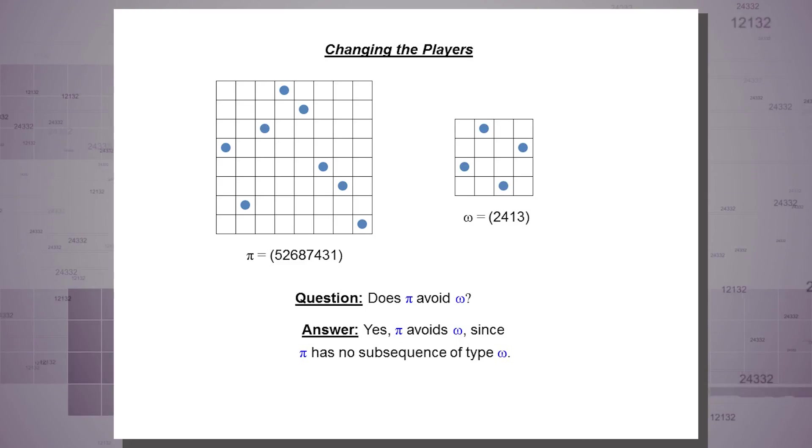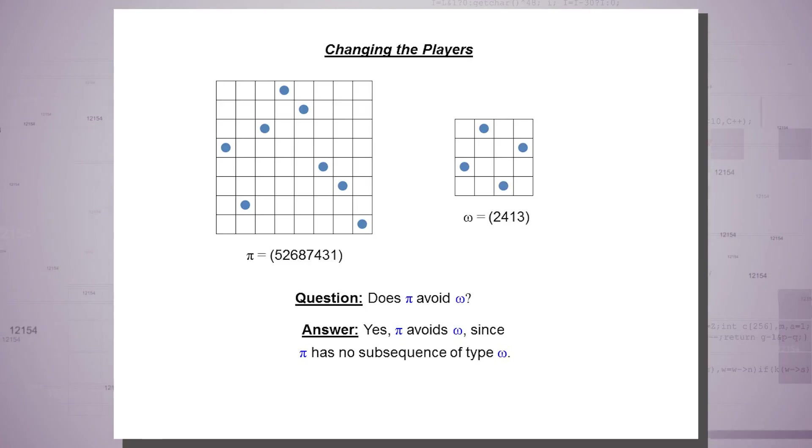Changing the players, keeping the first one but changing the second one, this is the other square permutation, 2, 4, 1, 3. The same question. Does the big permutation avoid the small one? And here you have to stare for a while to convince yourself that you cannot find this pattern here, which is not obvious. You have to convince yourself. So surprisingly, the answer is yes. The big permutation avoids the small one because it does not have any sub-pattern which is of the same type as the small permutation.